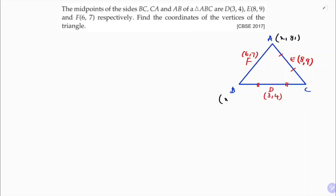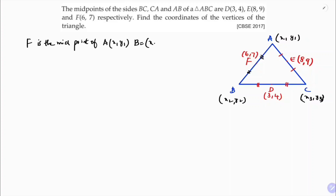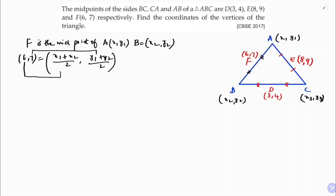F is the midpoint of A(x1, y1) and B(x2, y2). So using the midpoint formula, F equals (x1 plus x2 by 2, y1 plus y2 by 2). Since F is (6, 7), I equate abscissa with abscissa and ordinate with ordinate: 6 equals x1 plus x2 by 2.